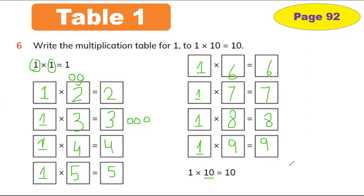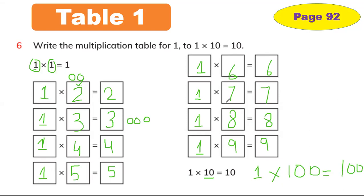Even if your number is 100, if you multiply 100 with 1, the answer will be 100. 1 multiply 99 is 99. So you have to memorize Table 1. Today you learned how to make Table 1.